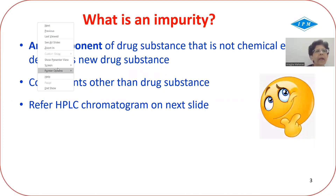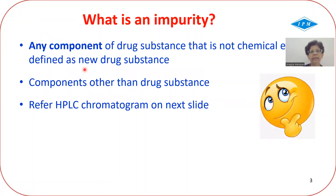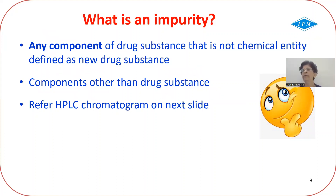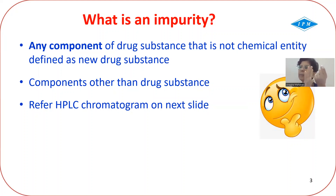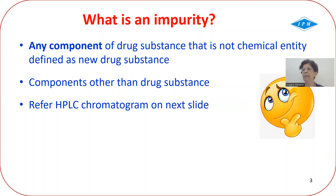What is an impurity? An impurity is any component which is not a drug substance. For example, you have paracetamol — whatever is present in it which is not paracetamol would be called an impurity. We will see this with the help of a chromatogram.